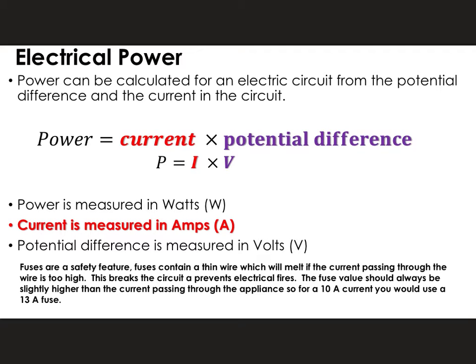Remember that fuses are a safety feature. Fuses contain a thin wire which will melt if the current passing through the wire is too high. That breaks the circuit and prevents electrical fires and prevents people from having electrical shocks. The fuse value should always be slightly higher than the current passing through the appliance. So for a 10 amp current, you would need to use a 13 amp fuse.